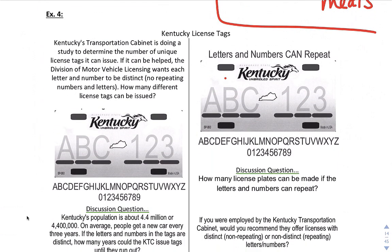Let's look at the license plate problem. Kentucky's Transportation Cabinet is doing a study to determine the number of unique license plates it can issue. If it can be helped, the Division of Motor Vehicle Licensing wants each letter and number to be distinct. No repeating. How many different license tags can be issued?